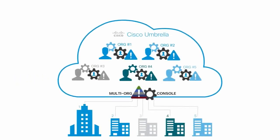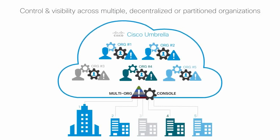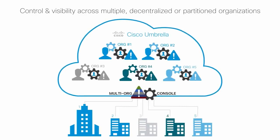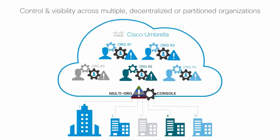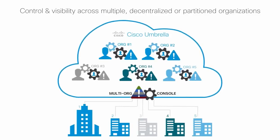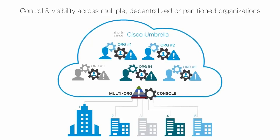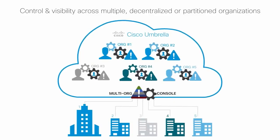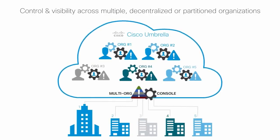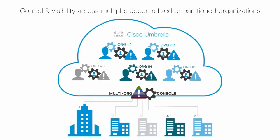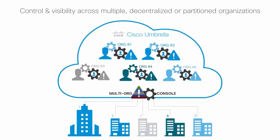The Multi-Org Console is an add-on option for Umbrella, designed for organizations with a centralized IT group or security team, or those responsible for multiple decentralized or partitioned organizations. It gives an administrator the ability to manage more than one organization within a single instance of the Umbrella dashboard. Each organization stands on its own with its own Umbrella dashboard, but several settings can be shared between organizations. Shared reports also exist to help the global administrator decide on actions to take.